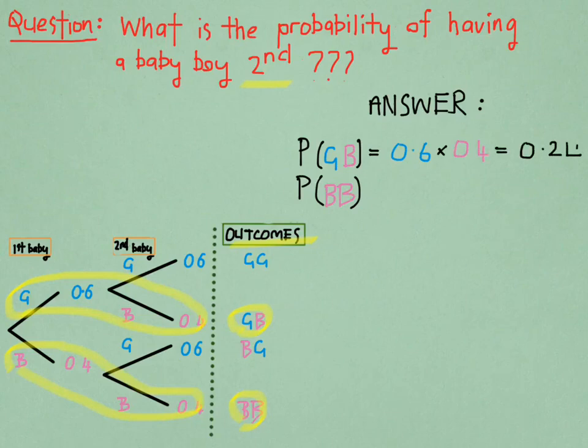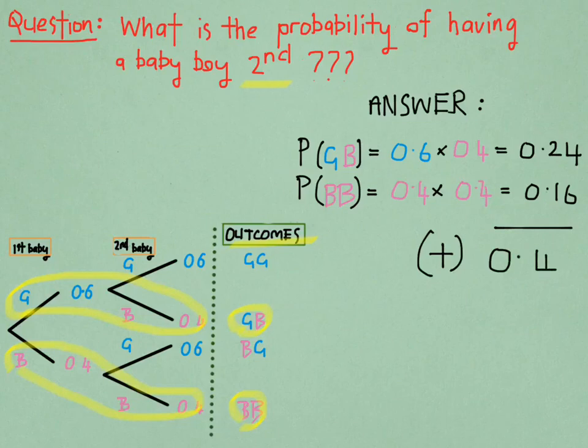Now we're going to use the probabilities that we found. 0.6 times 0.4. We're going to multiply them together to get 0.24. 0.4 times 0.4 equals 0.16. But this time we are going to add the two numbers that we found together to get the total probability. So the chance of having a boy second for this family is going to be 0.4.